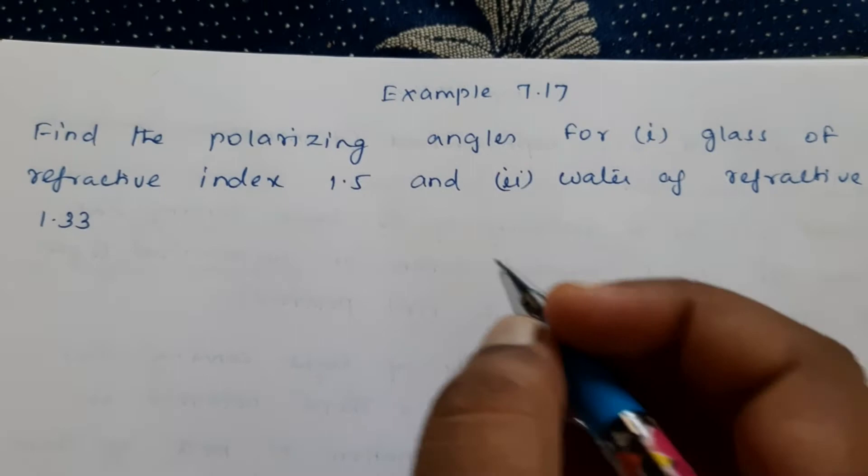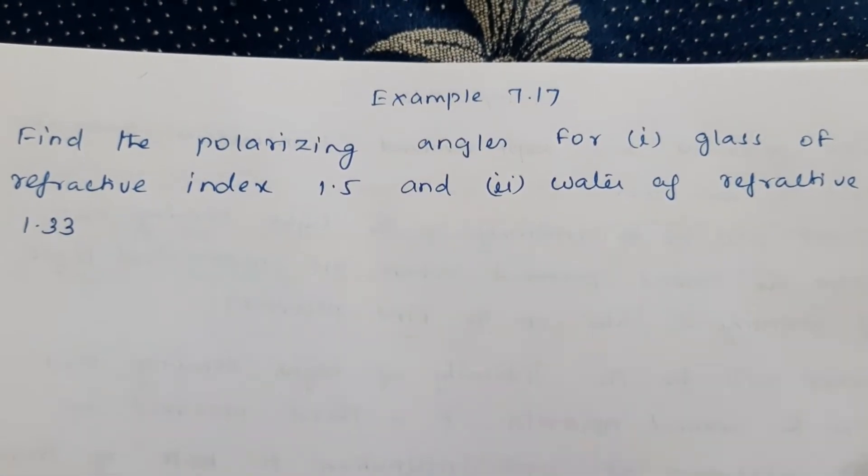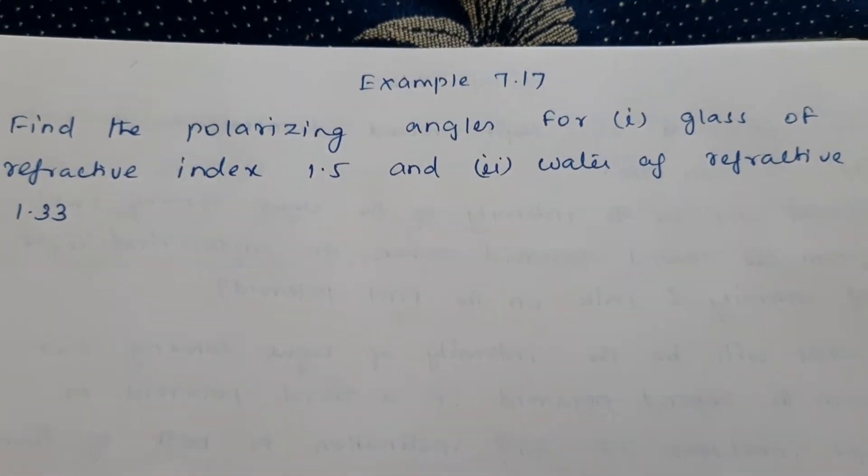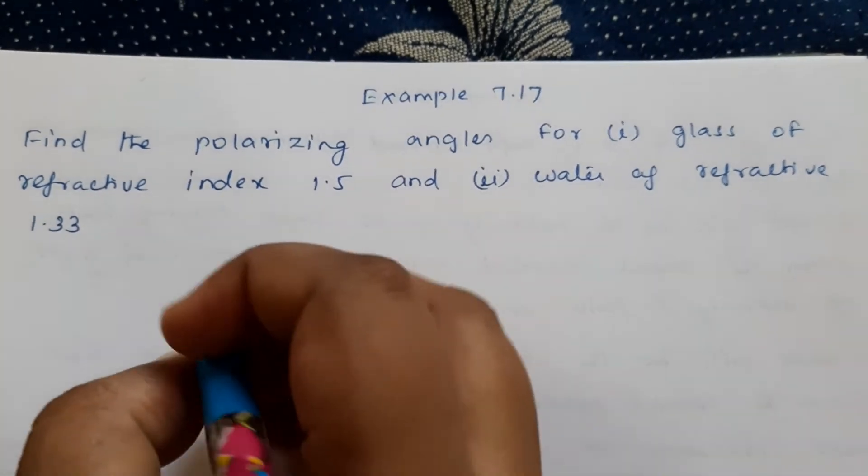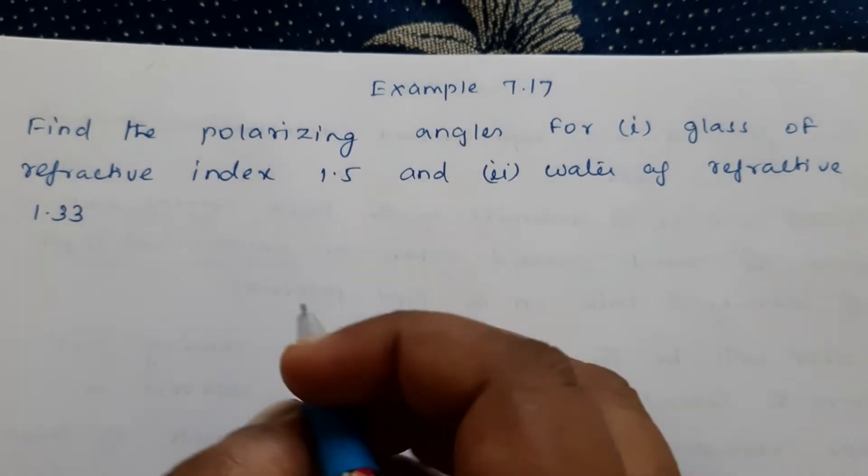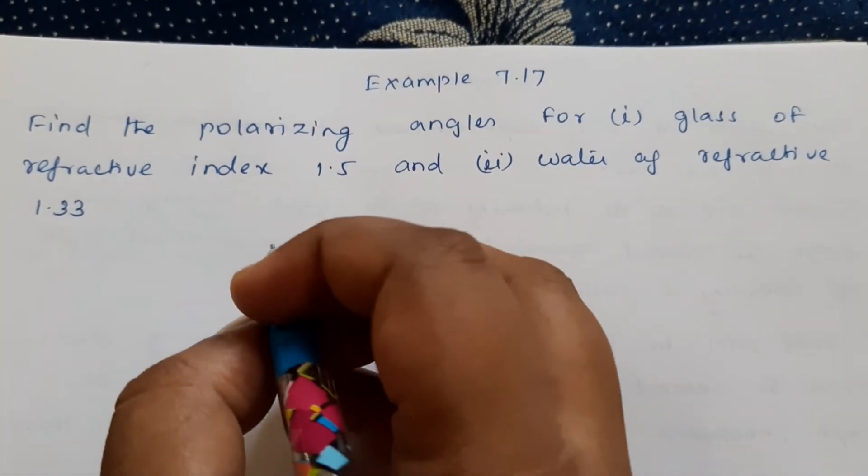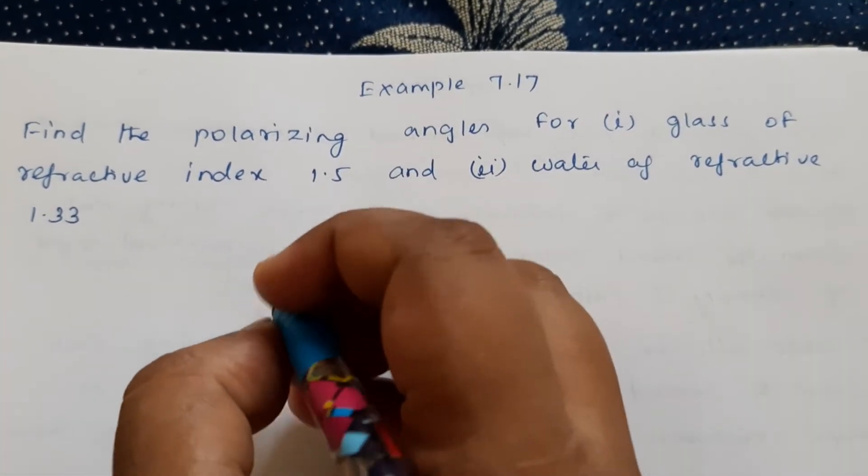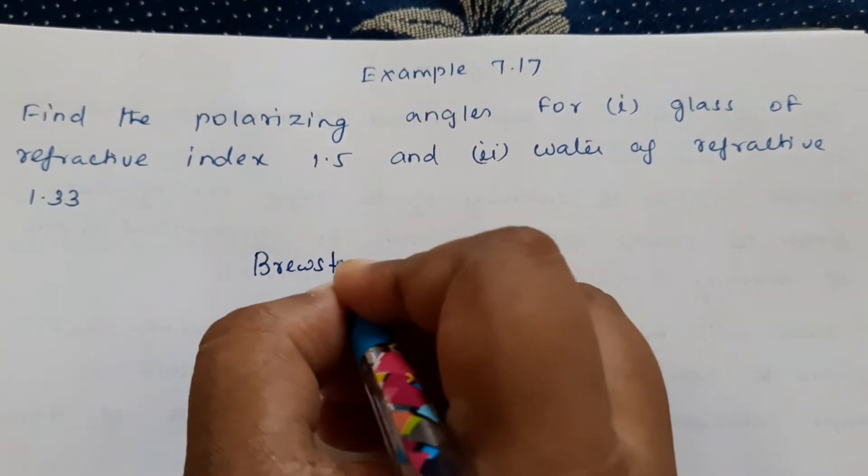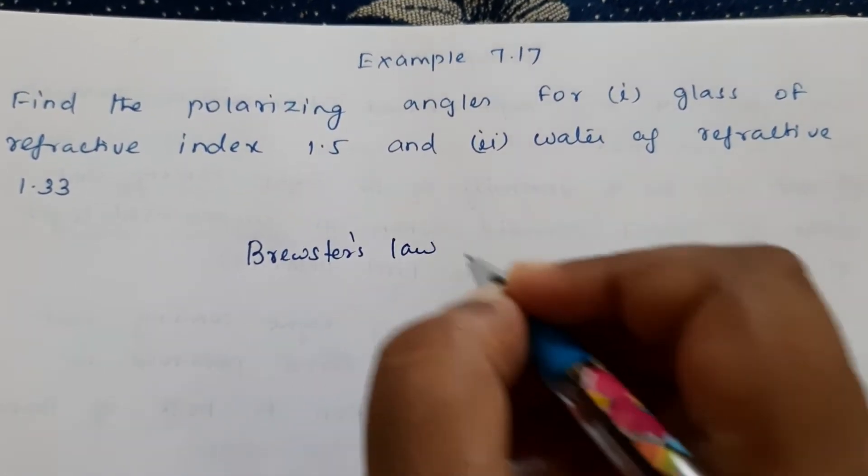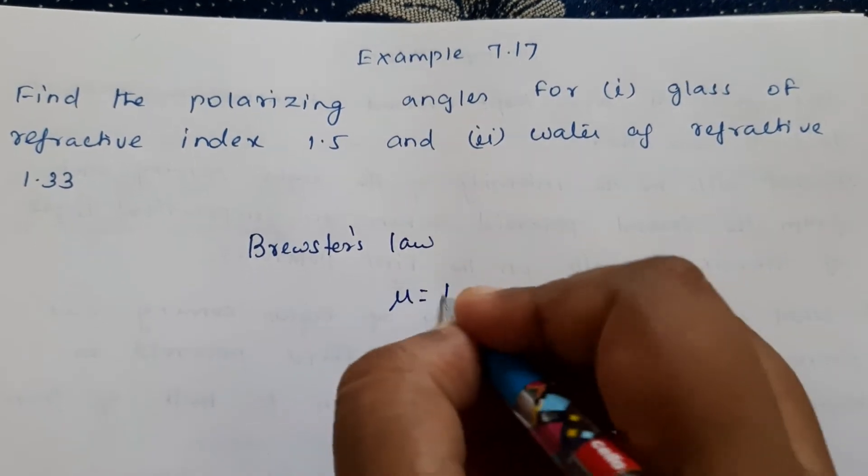The refractive index for glass is given as well as the refractive index for water. First we will find the polarizing angle for glass. To find the polarizing angle we have to use Brewster's law. Brewster's law says μ = tan ip.